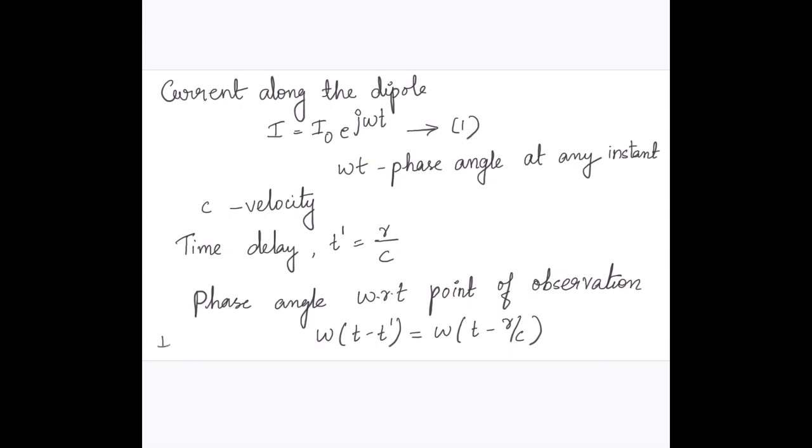The retarded current, usually the retarded current is denoted by I in square brackets. That will be equal to I0 into e raise to j omega of T minus R by C. This is the formula for retarded current in the short dipole when it is placed in the spherical coordinate system.